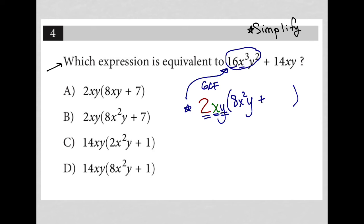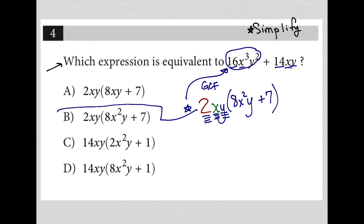Now I have my plus sign and I do it all over again. 2 times what is 14? That's 7. x times what is x? Just 1, so nothing to write there. y times what is y? Also just 1, so nothing to write there either. That means I'm finished — I've recreated the value of my original expression in factored form. Therefore, my correct answer is choice B.